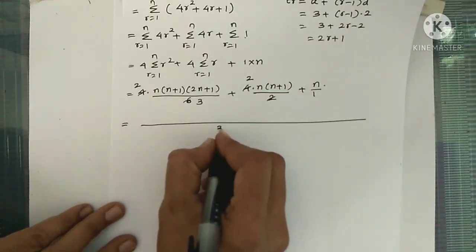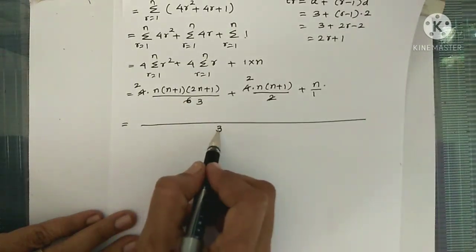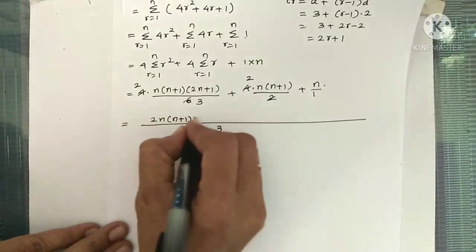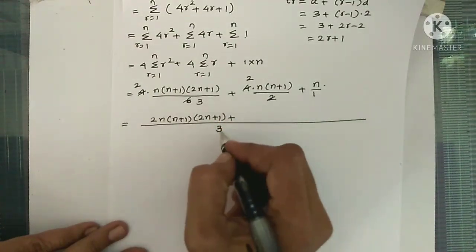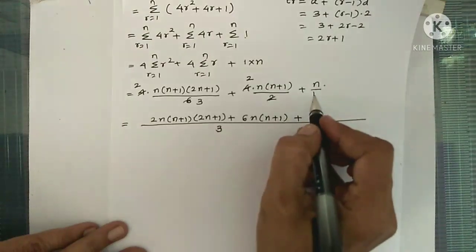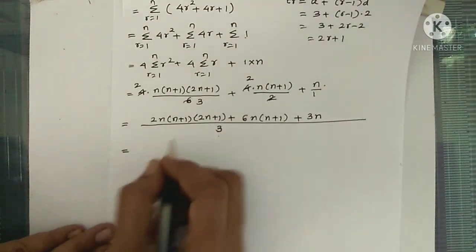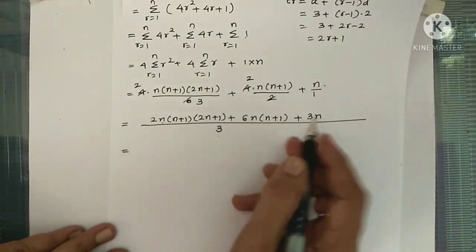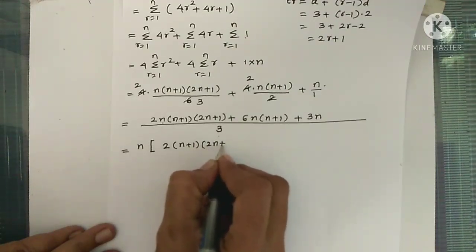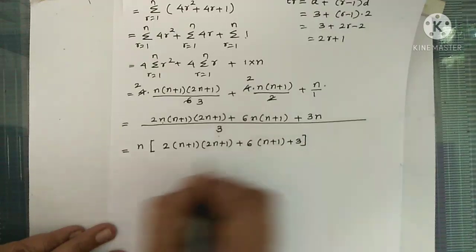With LCM = 3: the first term stays 2n(n+1)(2n+1), the second term becomes 6n(n+1), and the third becomes 3n — all over 3. Taking n common from all three terms: n divided by 3, times the bracket 2(n+1)(2n+1) + 6(n+1) + 3.